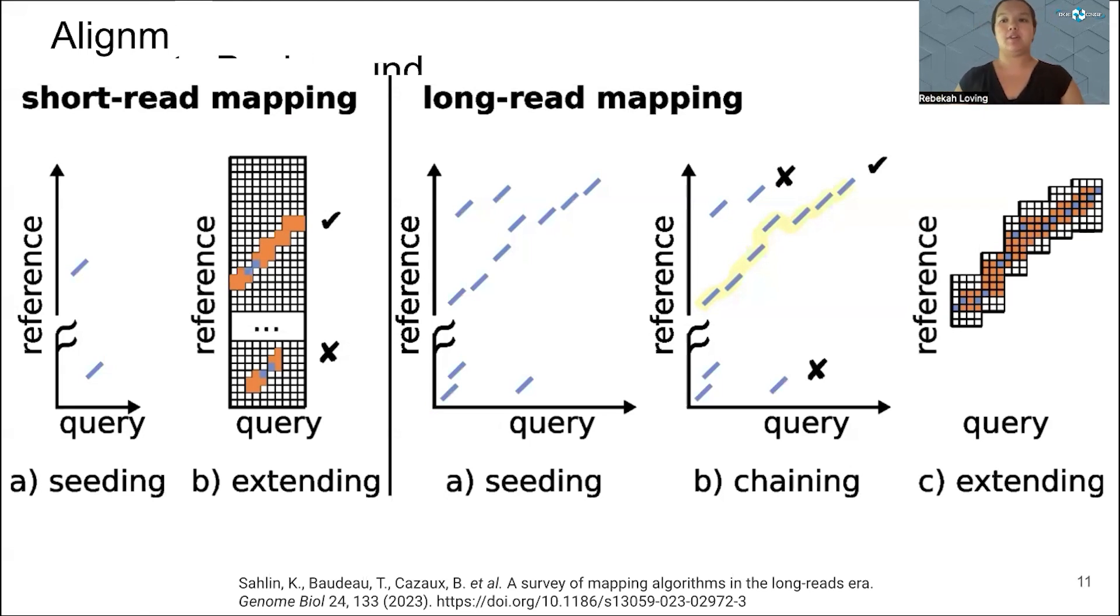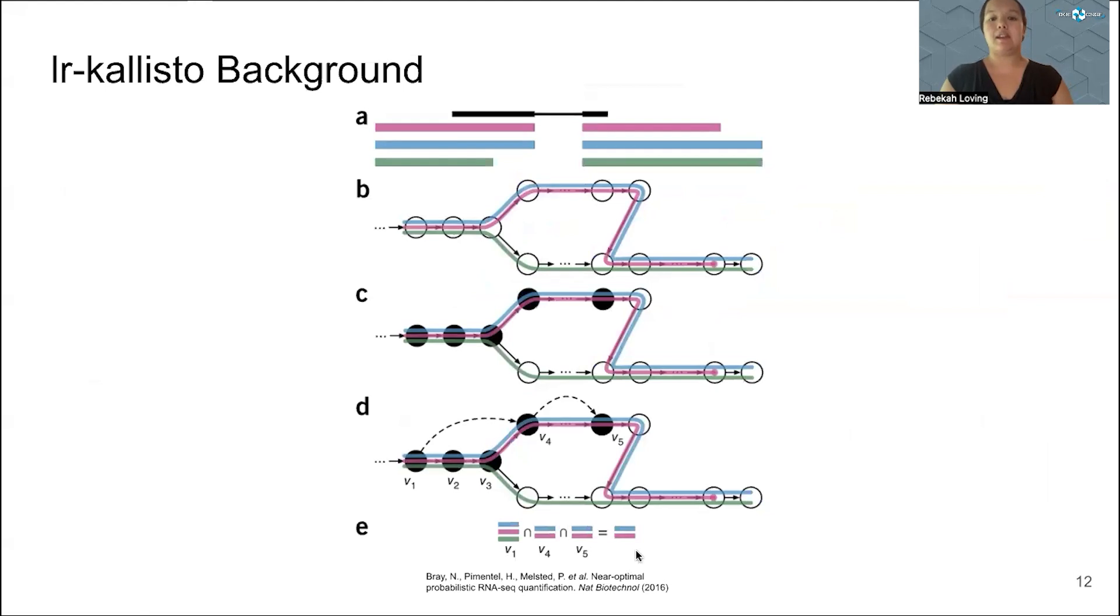Here we have an example transcript de Bruijn graph of three different transcripts: pink, blue, and green. And we have a block read being mapped within this transcript de Bruijn graph. To create the transcript de Bruijn graph, you have k-mers that you pull out of your transcripts, and where the transcripts are the same as each other can be collapsed into a single node. When they differ, the tree branches. But we only need to look at nodes at the beginning and the end of the collapses.